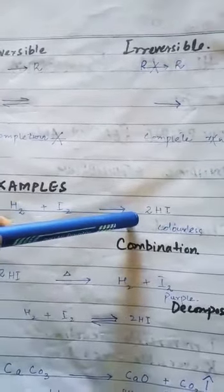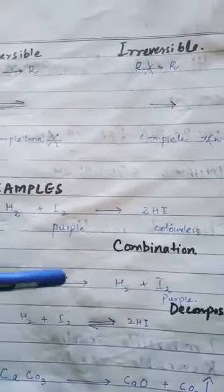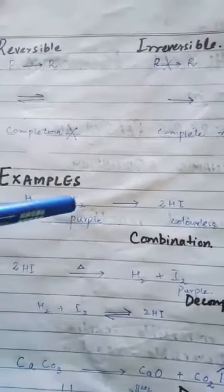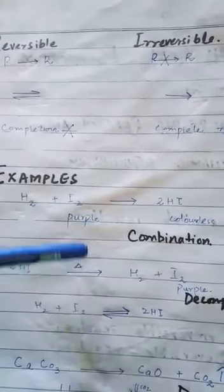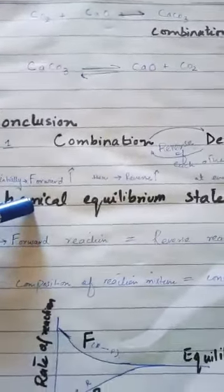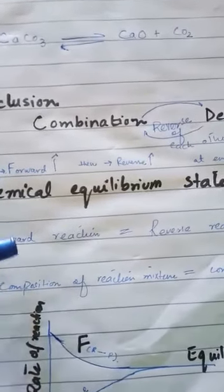Initially you have only reactants so the forward reaction rate is high, but as products form, the reverse reaction rate starts to increase. A state is eventually reached in which the rate of the forward reaction and the rate of the reverse reaction become equal — that state is known as the chemical equilibrium state. At chemical equilibrium, the rate of the forward reaction equals the rate of the reverse reaction.